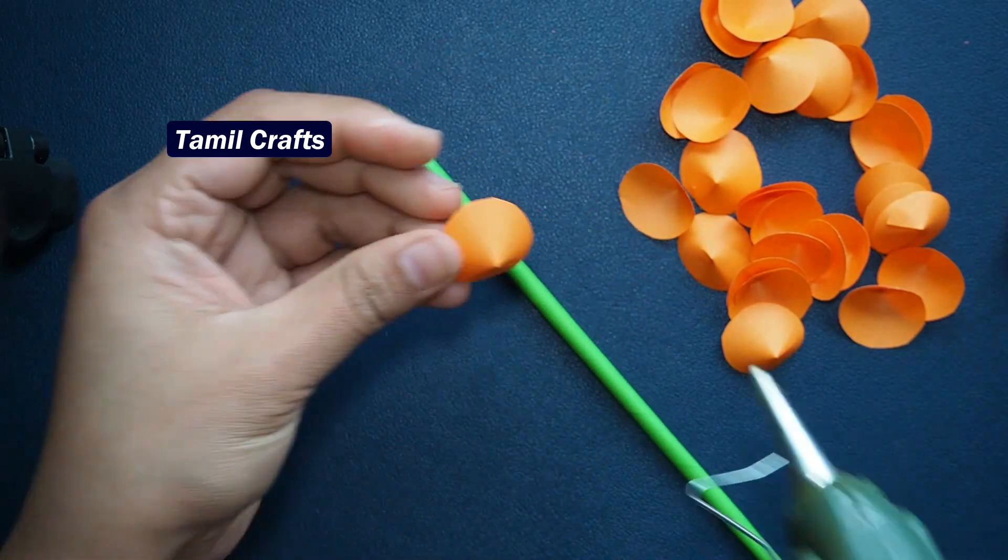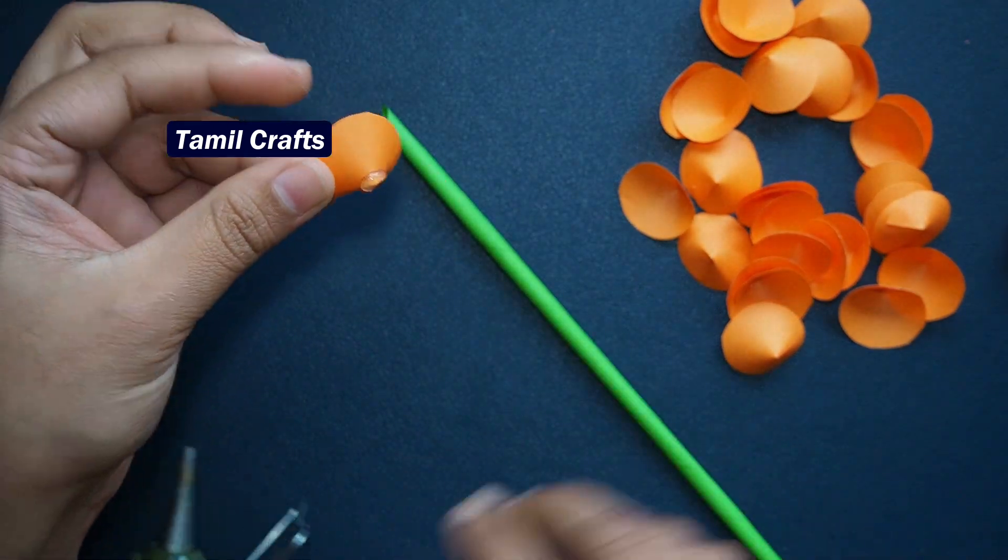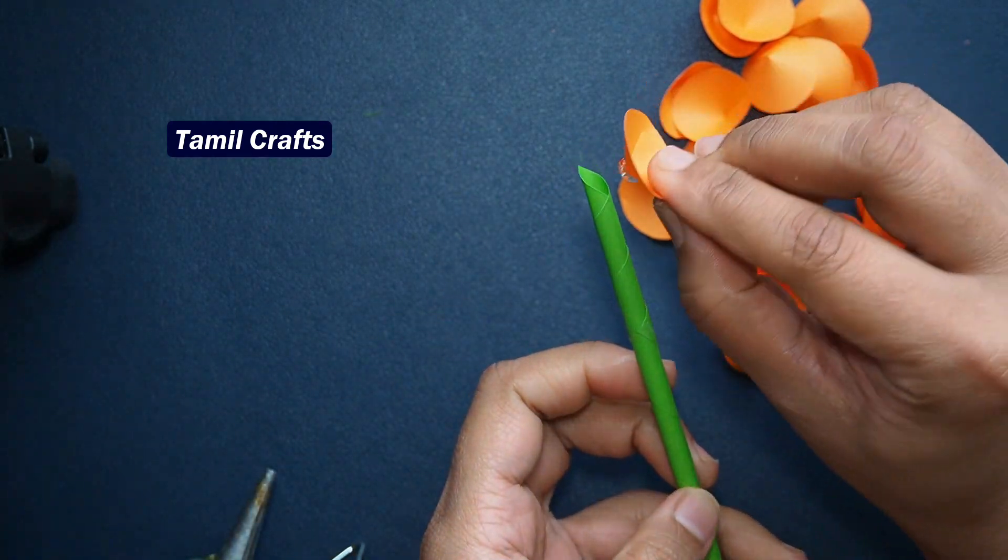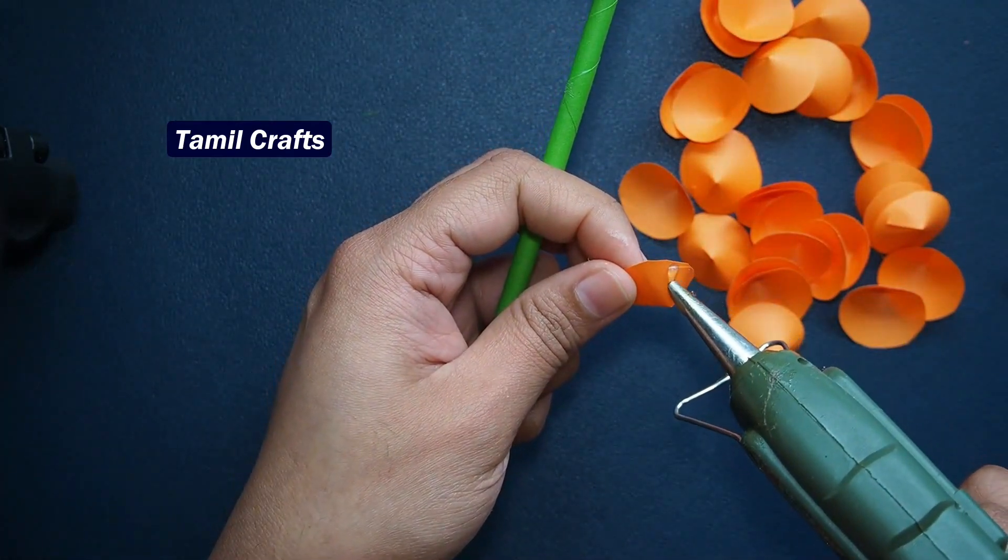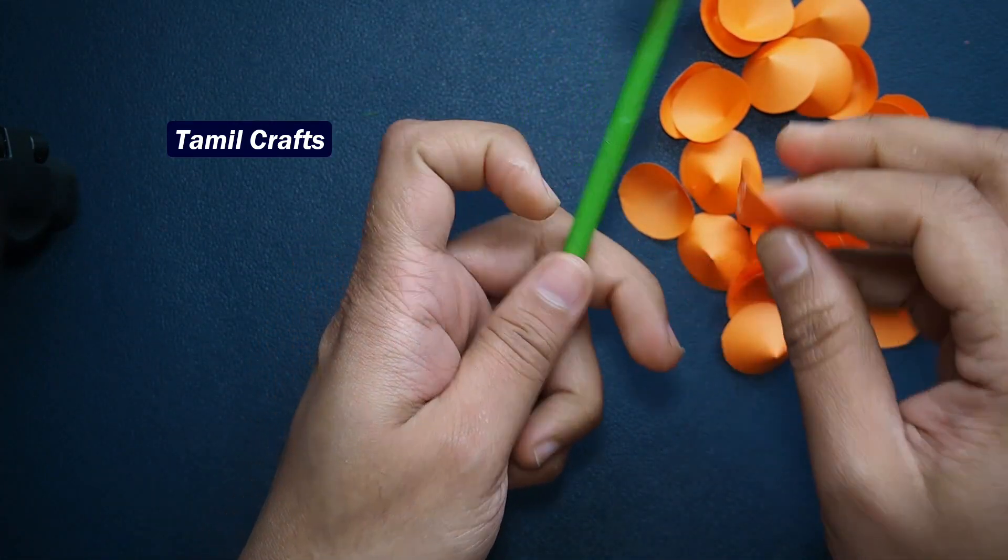Let's put the orange color flower on top. First, put it on the tip. Apply strong glue on top. That's why I'm using a glue gun. You can also use Fevicol.